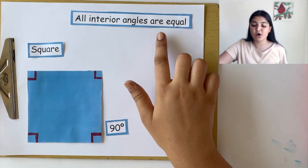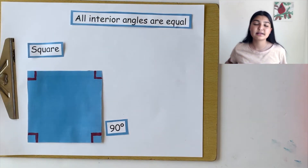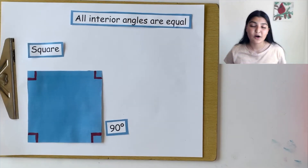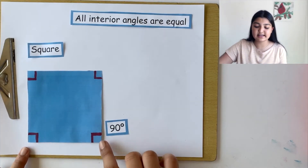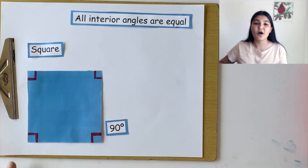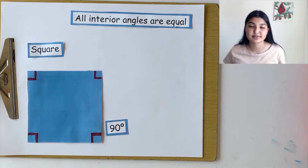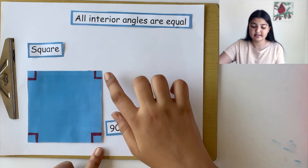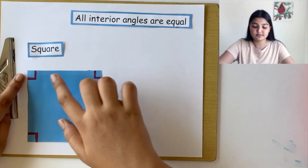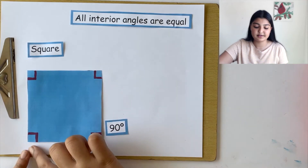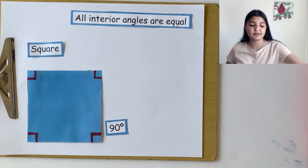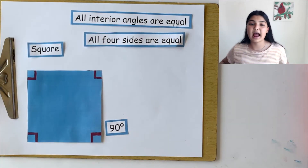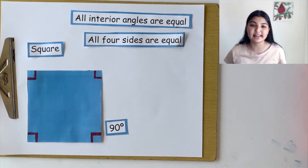So that means that all the interior angles of a square have the same measurement, or they are all equal. But what about the sides? All four sides of a square also have the same measurement, which means all four sides are equal, or have the same measurement in length.